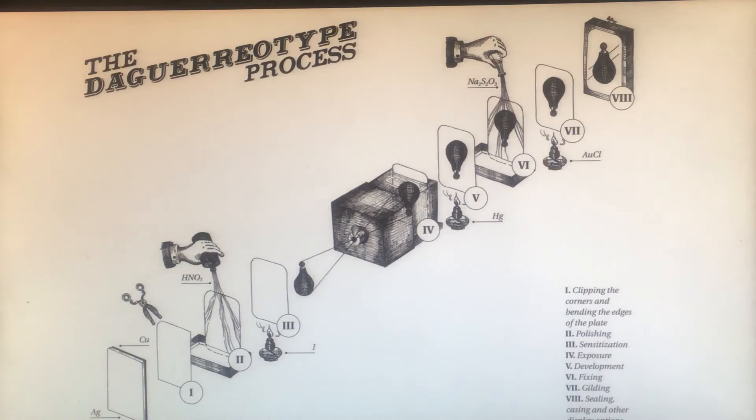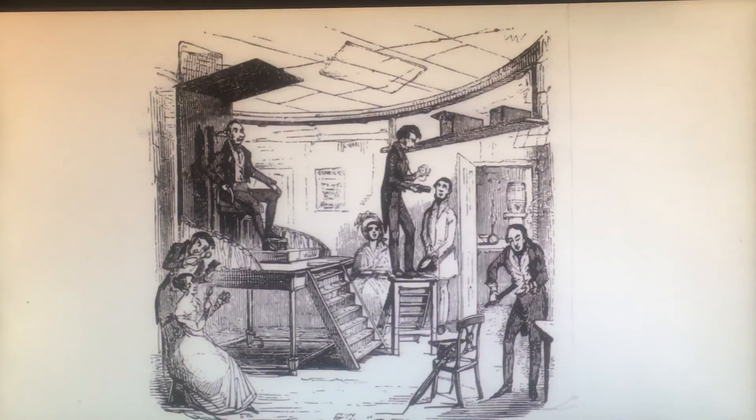You can see a transparent negative, the light source, and then it comes out as the positive photograph. The daguerreotype process was pretty complicated — you had to be in a studio to do it. There was no way to do it outdoors; it had to be in a studio. Here's a drawing, an illustration of the studio.